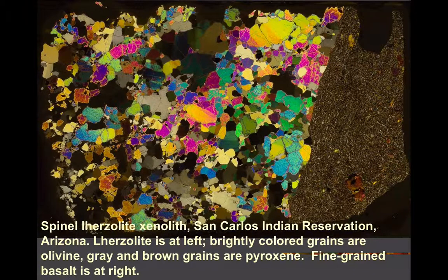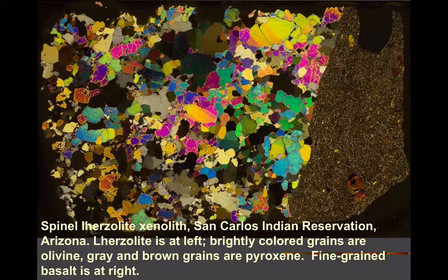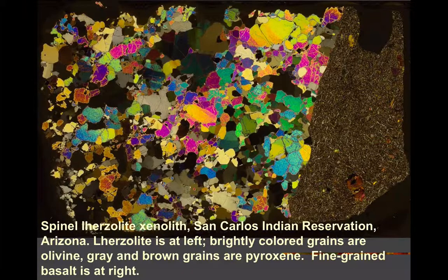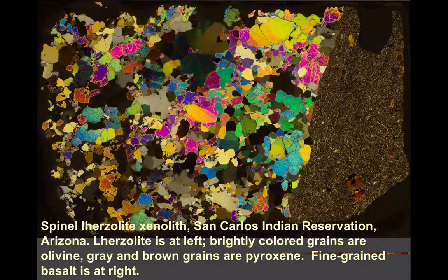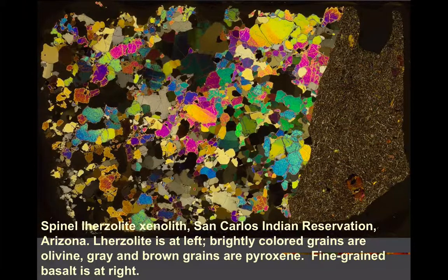If we look at this in thin section, this particular slide shows us what we've seen in the field photograph. On the right hand side we can see the very fine grained basalt. On the left hand side, this xenolith of principally very bright coloured olivine, and the grey and brown crystals within this, which are orthopyroxene. We can see a clear difference between the rocks, and notice also a very sharp edge to the xenolith of peridotite.